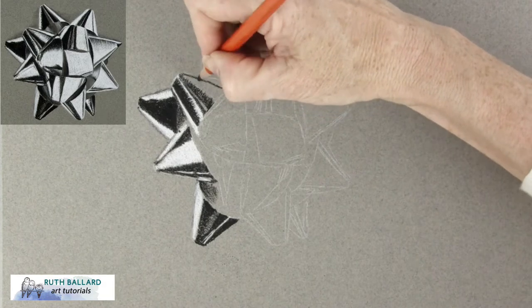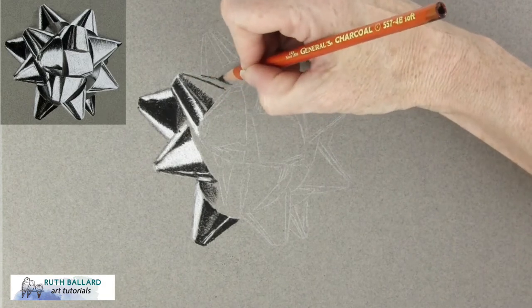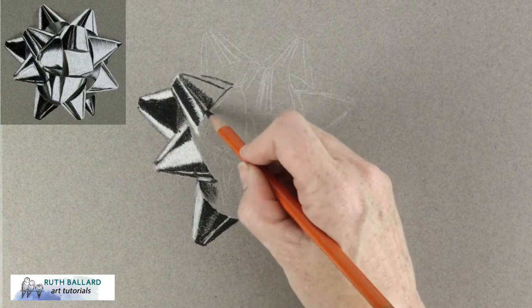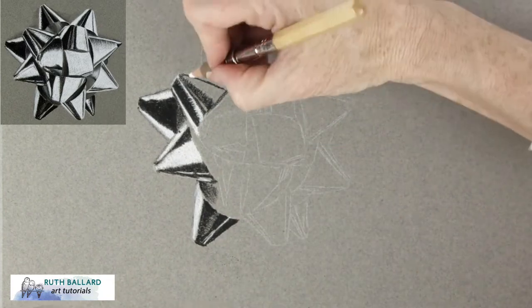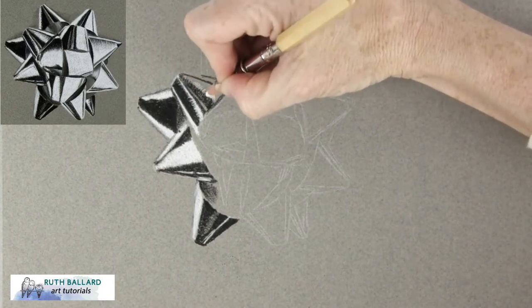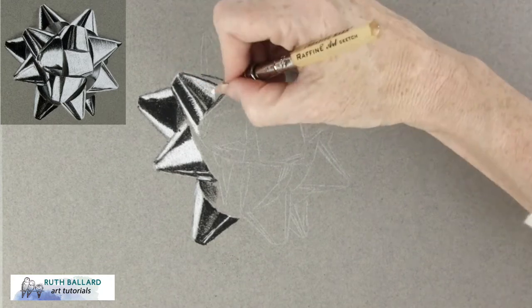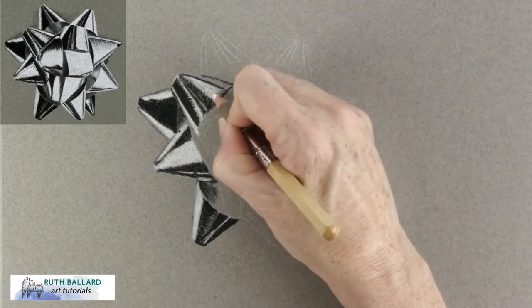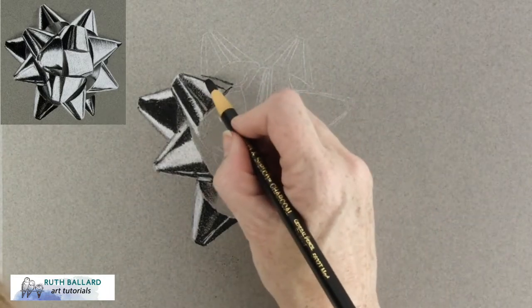The words tonal value don't mean a lot to new artists. It just refers to how light or how dark objects are. Objects will appear brighter and lighter when a darker object is placed next to it and vice versa.